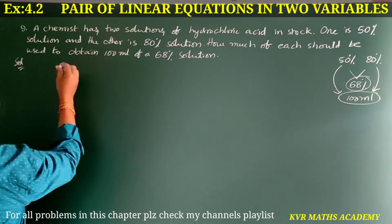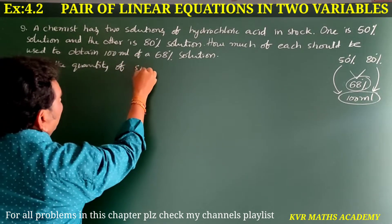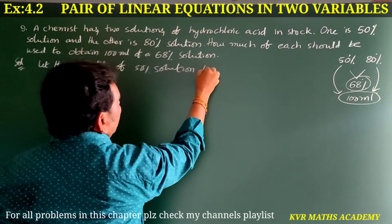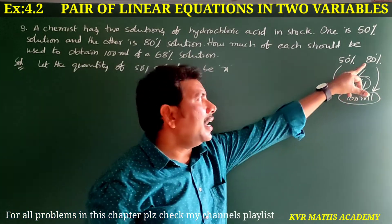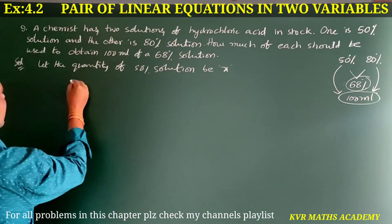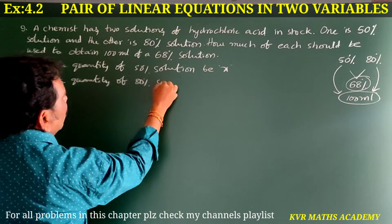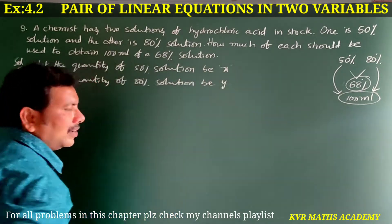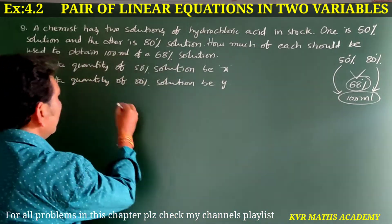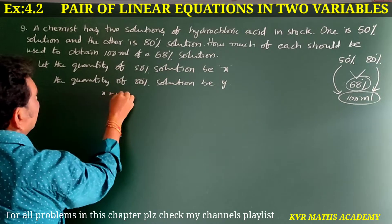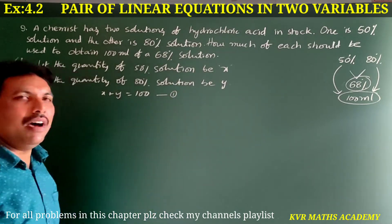Let the quantity of 50% solution be X and the quantity of 80% solution be Y. Since the total should be 100 ml, we have X plus Y is equal to 100. Let this be equation number 1.